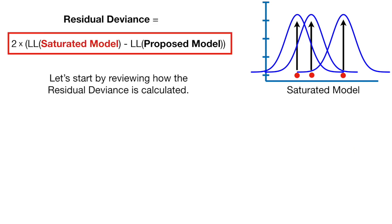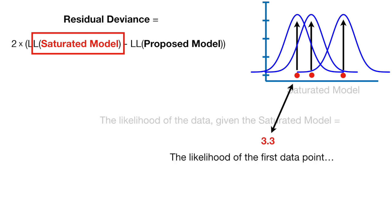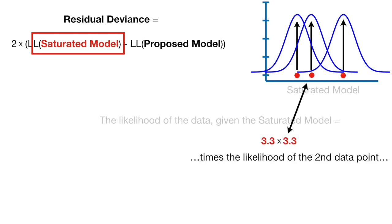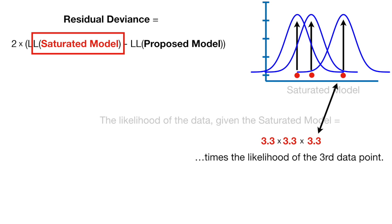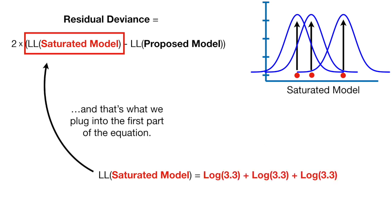Let's start by reviewing how the residual deviance is calculated. The likelihood of the data given the saturated model is equal to the likelihood of the first data point times the likelihood of the second data point times the likelihood of the third data point. Note, we're just using three data points in this example; however, if you've got more data, you just keep adding them to the multiplication. And the log likelihood is just the log of the likelihood, and that's what we plug in to the first part of the equation.